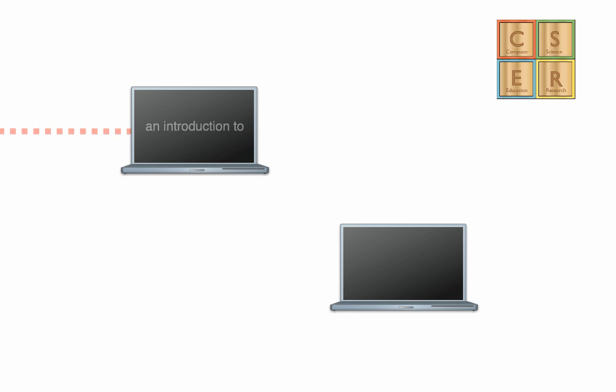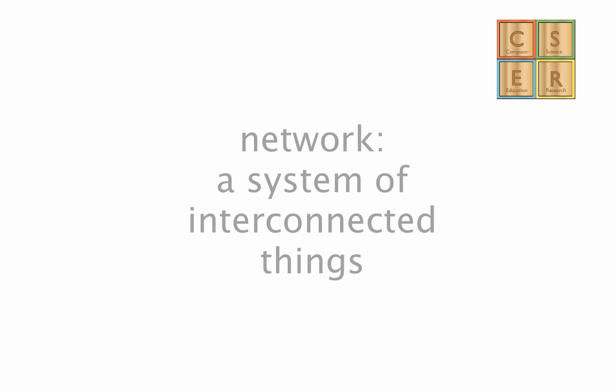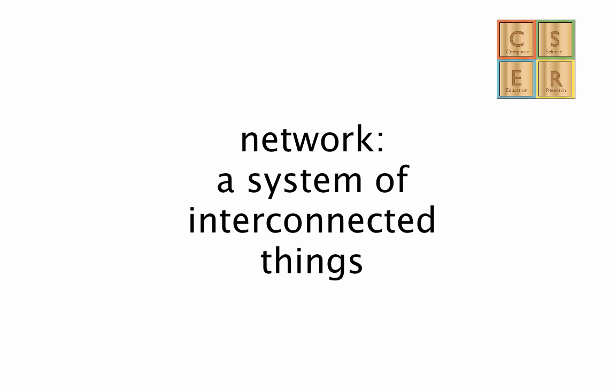Hi, and welcome to an introduction to computer networks. We've all seen networks. The definition of a network is actually quite simple and general — it's a system of interconnected things. But what does this mean in the computer context?